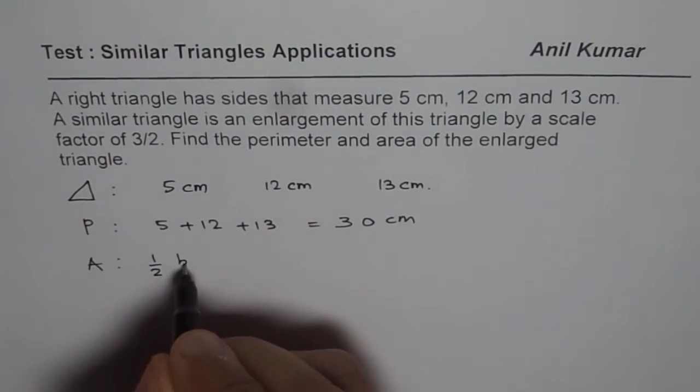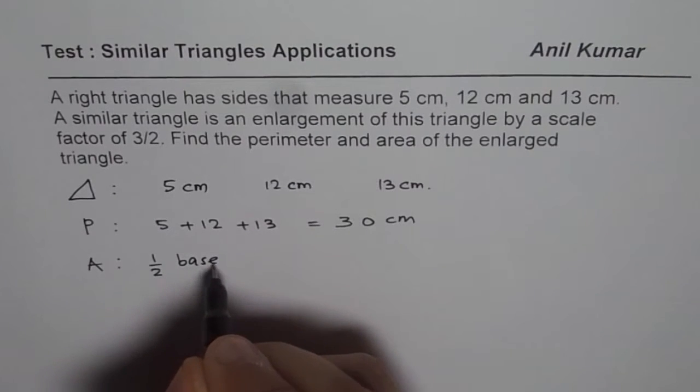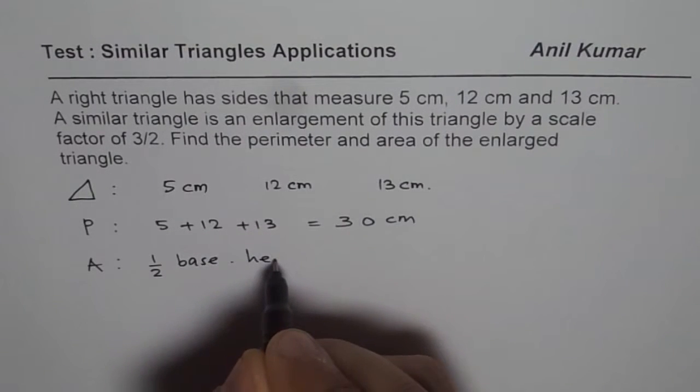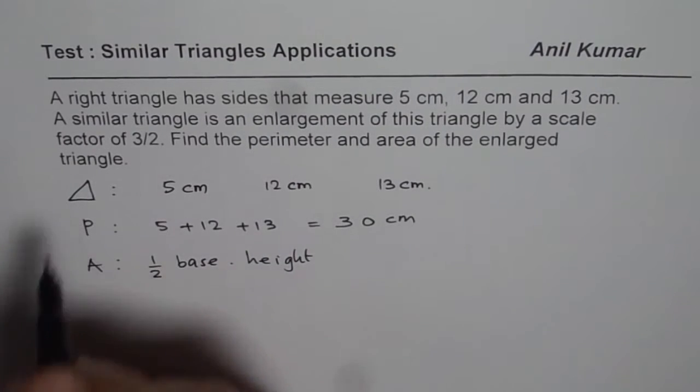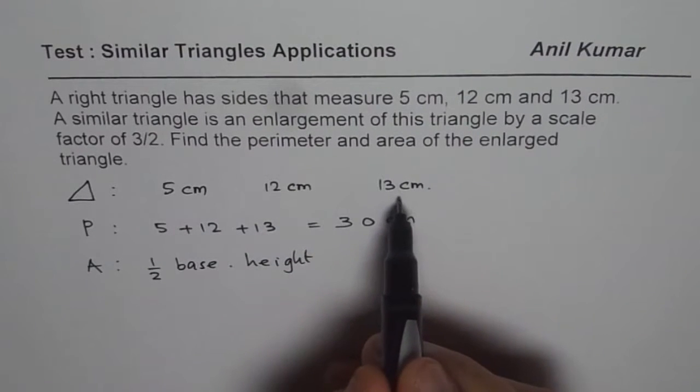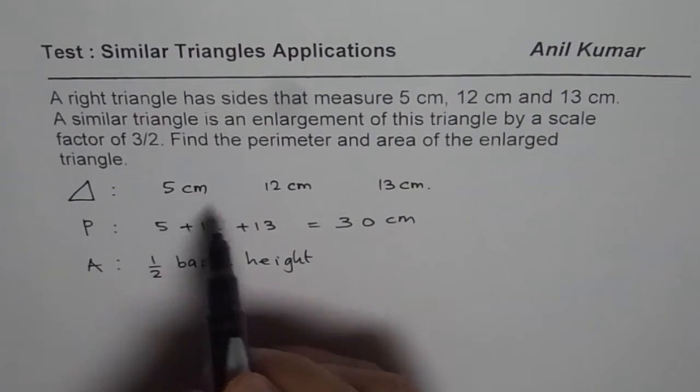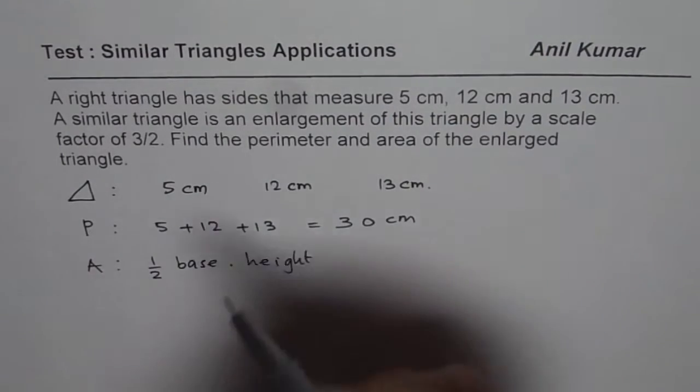So 30 cm is the perimeter of this triangle and how about the area? Area is half base times height. Now in a right triangle, the longest side will be hypotenuse.